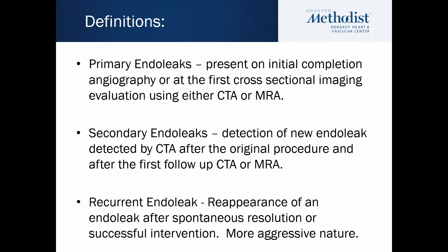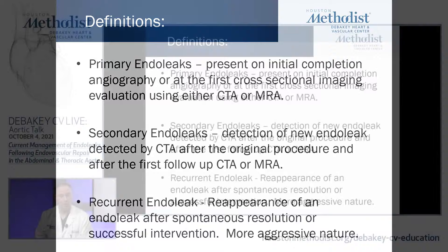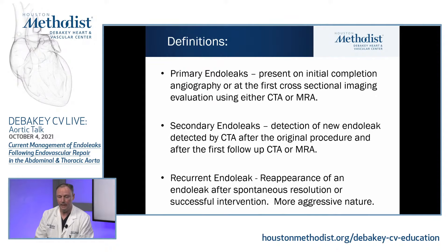The best way to start is with definitions. A primary endoleak is one present on the initial completion angiography at the time of graft implant or at the first cross-sectional imaging evaluation using either CTA or MRA. A secondary endoleak is detection of a new endoleak by CTA or other imaging after the original procedure and after the first follow-up CTA or MRA. A recurrent endoleak is a reappearance of an endoleak after documented spontaneous resolution or after what was thought to be successful intervention — these are considered to have a more aggressive nature and require aggressive treatment.